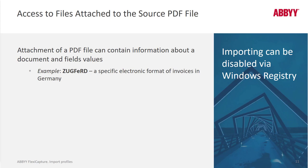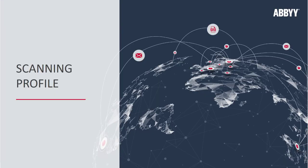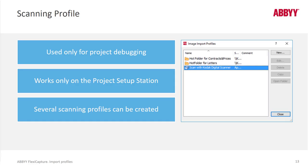Different formats are supported — for example, PDF/A formats that embed invoice information in machine-readable XML format, so that's accessible to you as well. You also have the capability of going to the image import profile dialog and setting up a scan station profile. This is really just for project debugging and testing; it works only from the project setup station, but it enables you to scan directly to the project setup station.